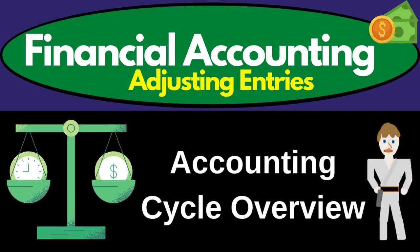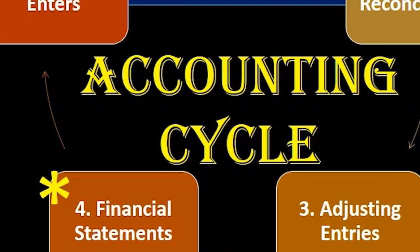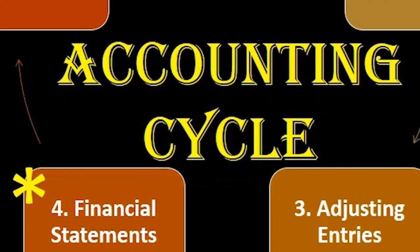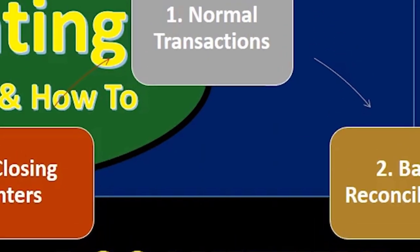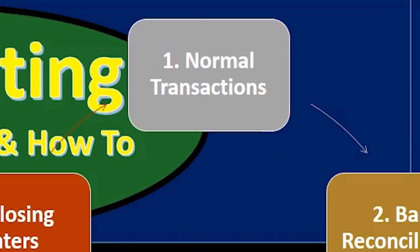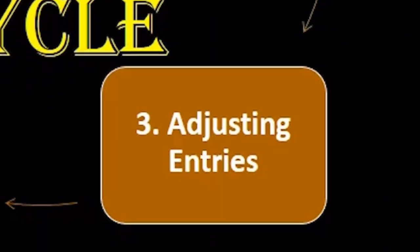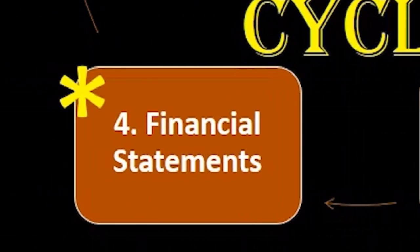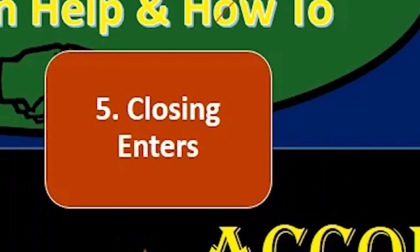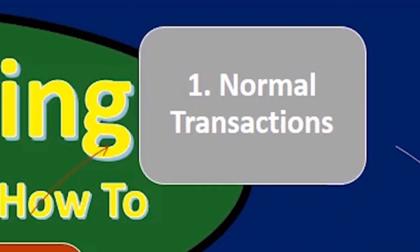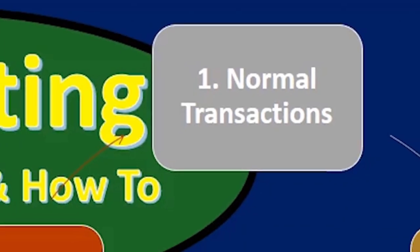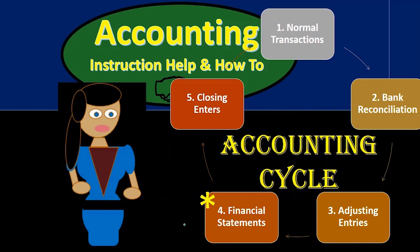In this presentation we're going to be talking about the accounting cycle, or the accounting process — that process that the accounting department will go through on a systematic basis, over and over again. Typically thought of as a monthly process, although it could be thought of as a yearly process or some other timeframe. These are the steps we'll be going through, always keeping in mind that end goal of financial accounting: the financial statements.